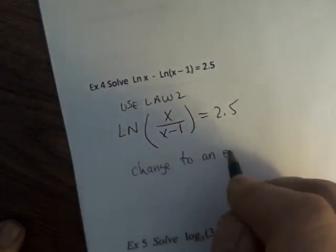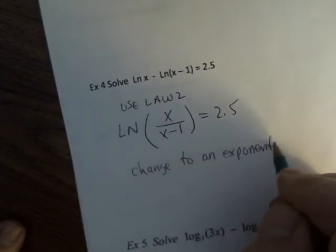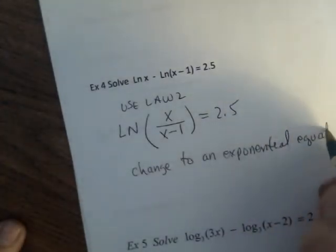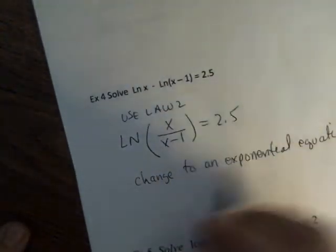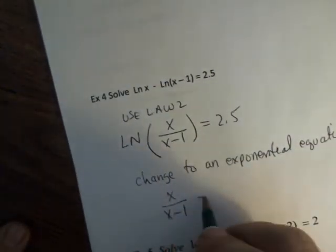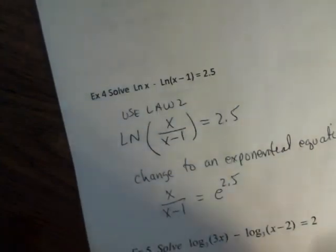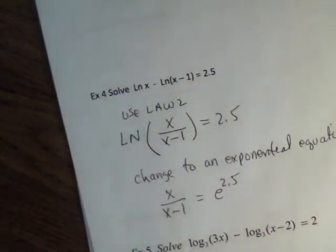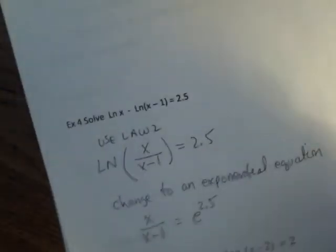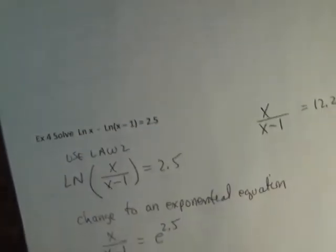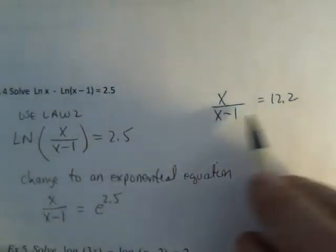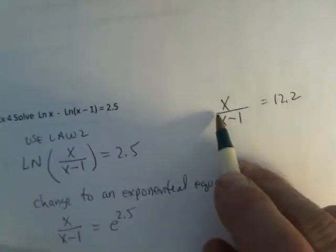Now, I'm going to change to an exponential equation. And remember, your base is e. So, on my calculator, I figure out what e to the 2.5 is. And I get about 12.2. So, x over x minus 1 equals 12.2. So, at this point, we do have a fractional equation. We can multiply both sides by x minus 1. Or you can cross multiply, whatever you want to do.